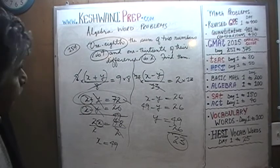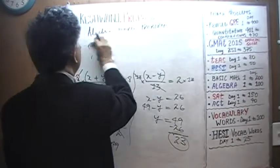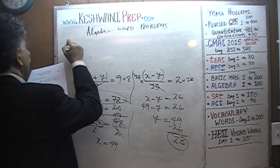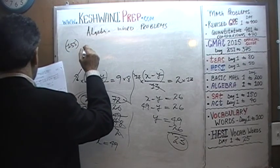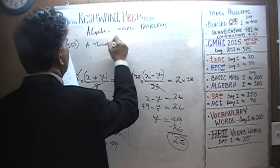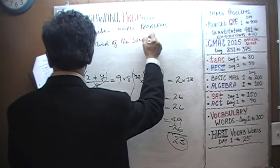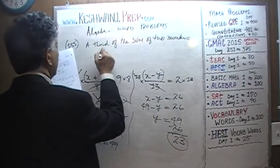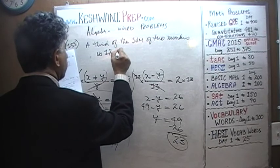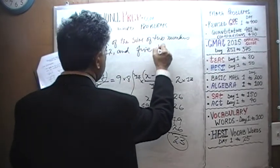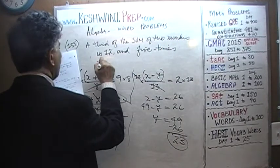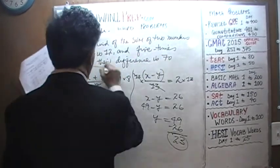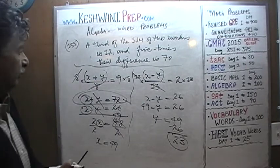Next problem tells us 155. It tells us that a third of the sum of two numbers is 12, and 5 times the difference is 70. What are the two numbers?